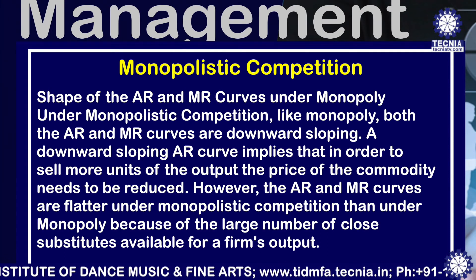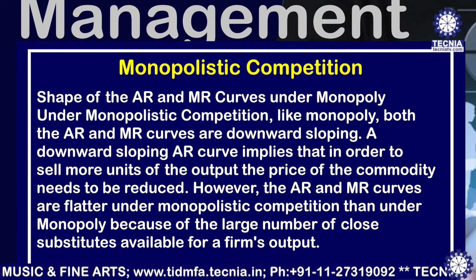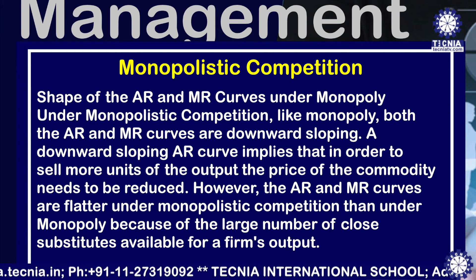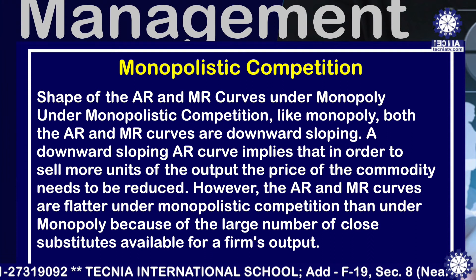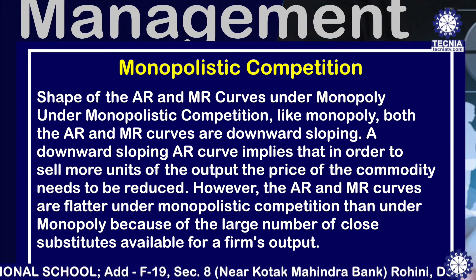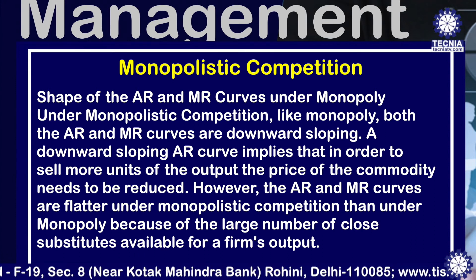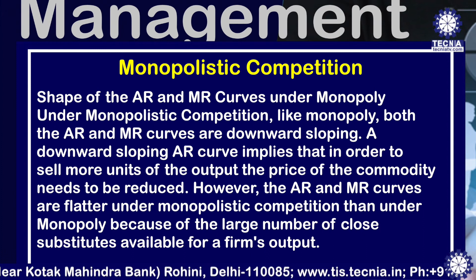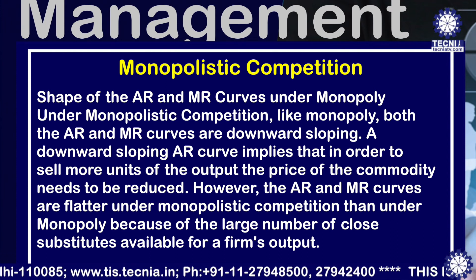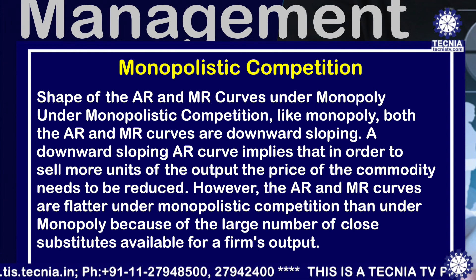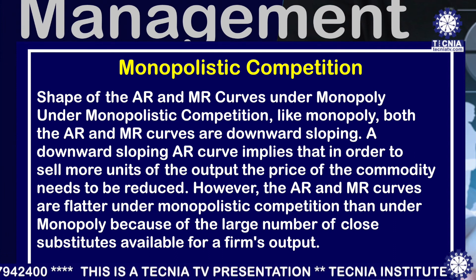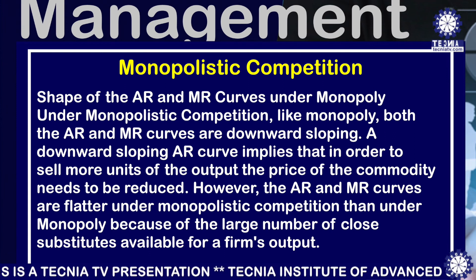The next topic is the shape of AR and MR curves under monopolistic competition. Like monopoly, both the AR and MR curves are downward sloping. A downward sloping AR curve implies that in order to sell more, the firm has to reduce the price. However, the AR and MR curves are flatter under monopolistic competition compared to monopoly, because in monopoly consumers have very little or no choice, but under monopolistic competition they have a wider choice, creating more elasticity — if the price is higher from one seller, the consumer can easily shift to another.